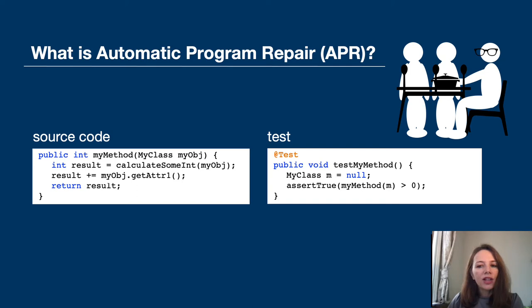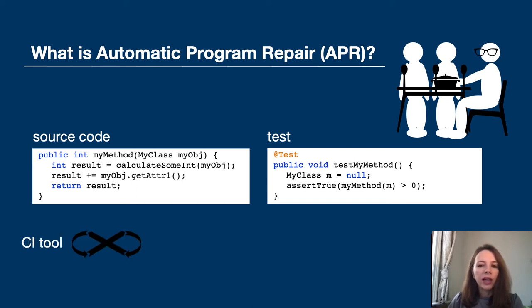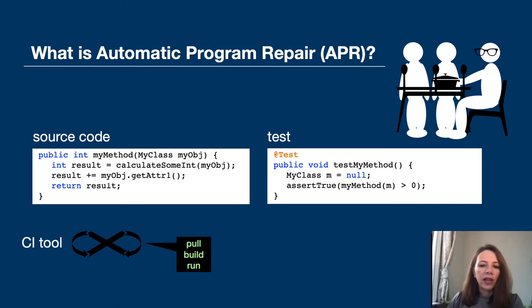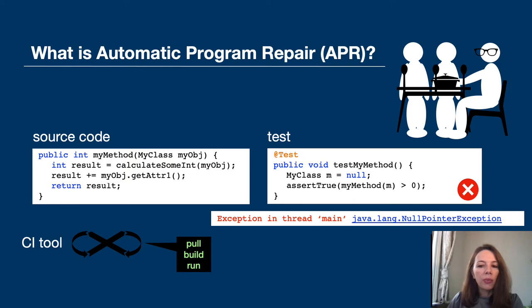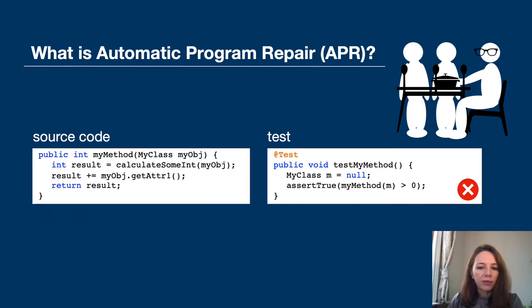During your lunch break a continuous integration tool pulls and builds your code and runs tests. This time the test fails due to a null pointer exception.